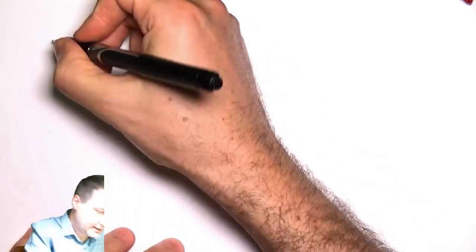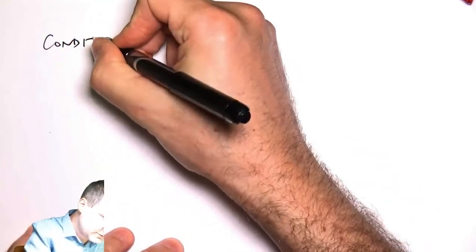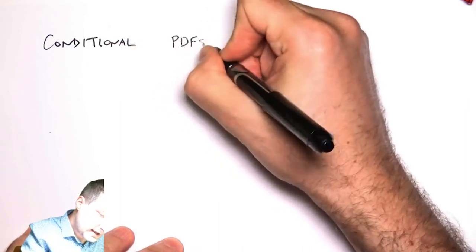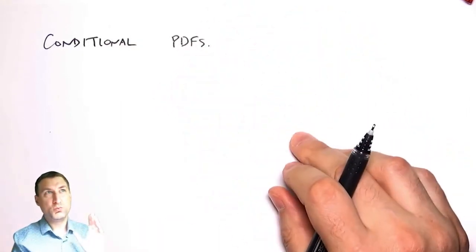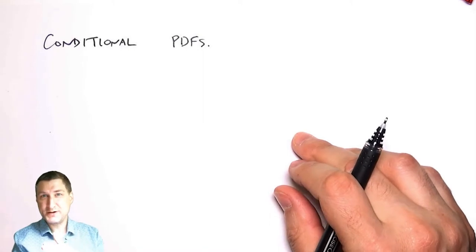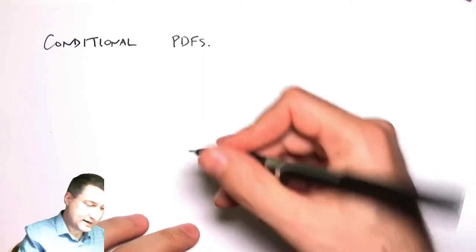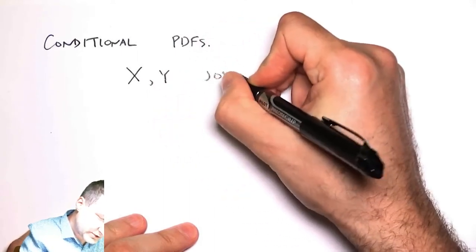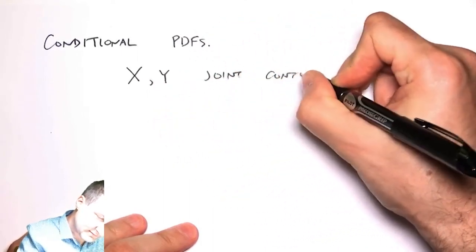We've been talking about conditional probability in different ways. First, we talked about it in terms of two joint discrete random variables, then in terms of one continuous random variable depending on one discrete random variable. Now I want to do the full thing where X and Y are joint continuous random variables.